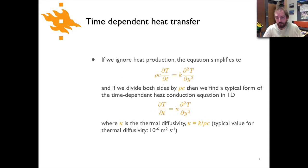If we ignore the heat production we can drop that term off of our equation. So now we have simply rho c dT/dt equals k times the second derivative of temperature with respect to depth.